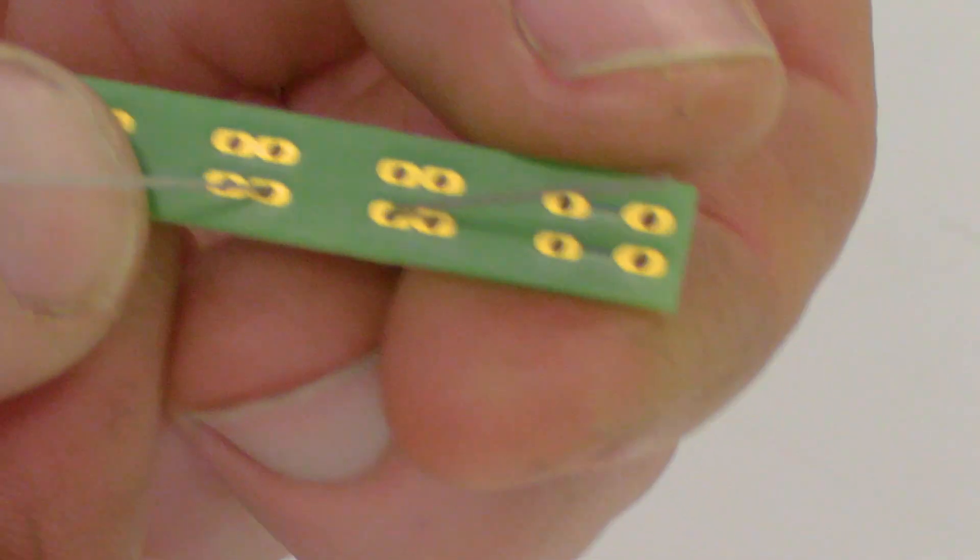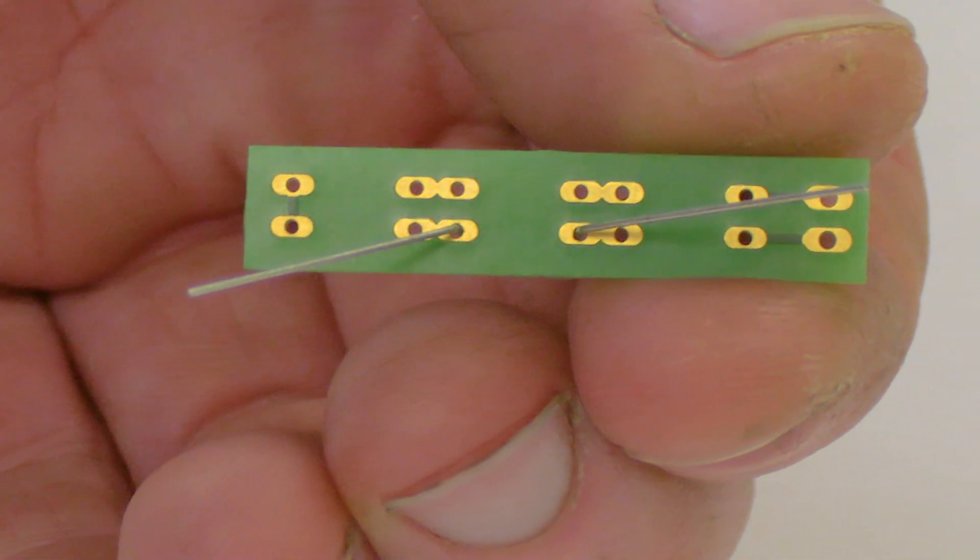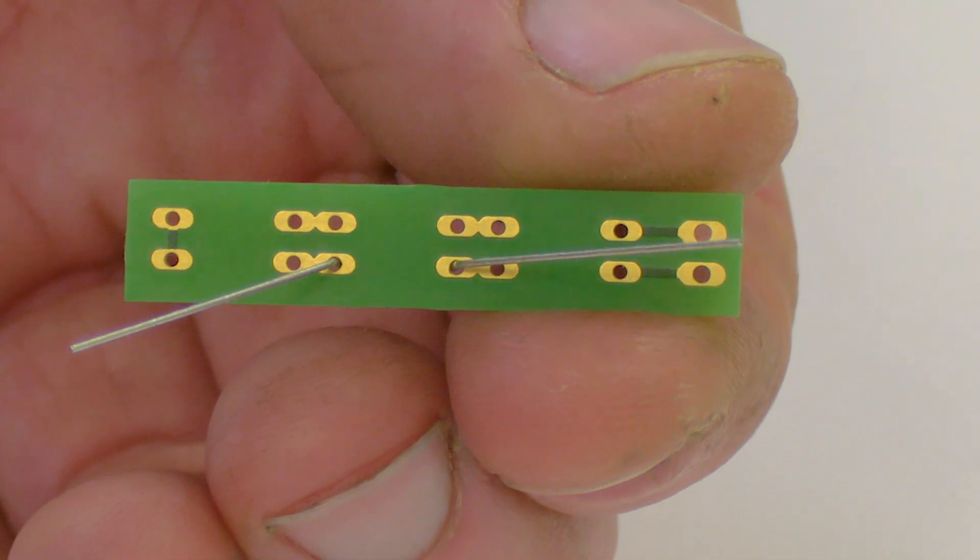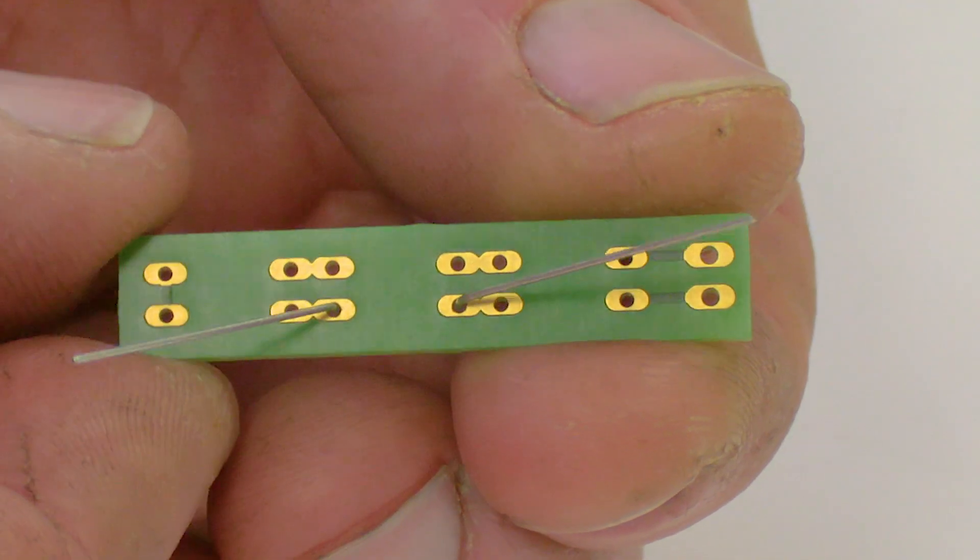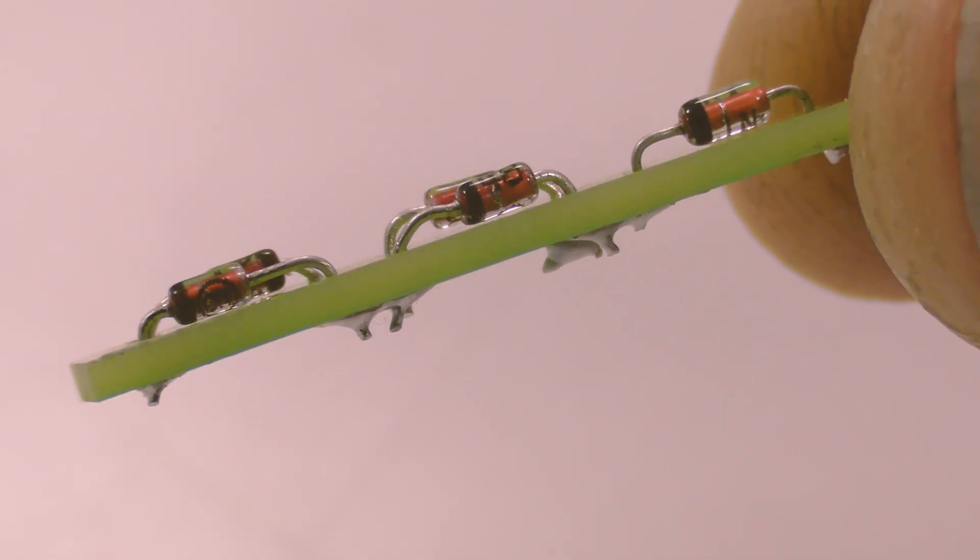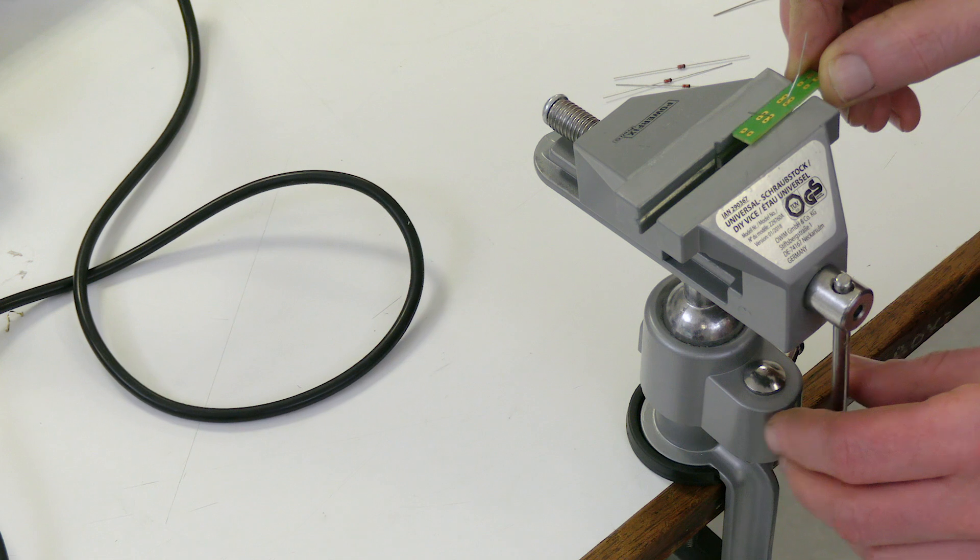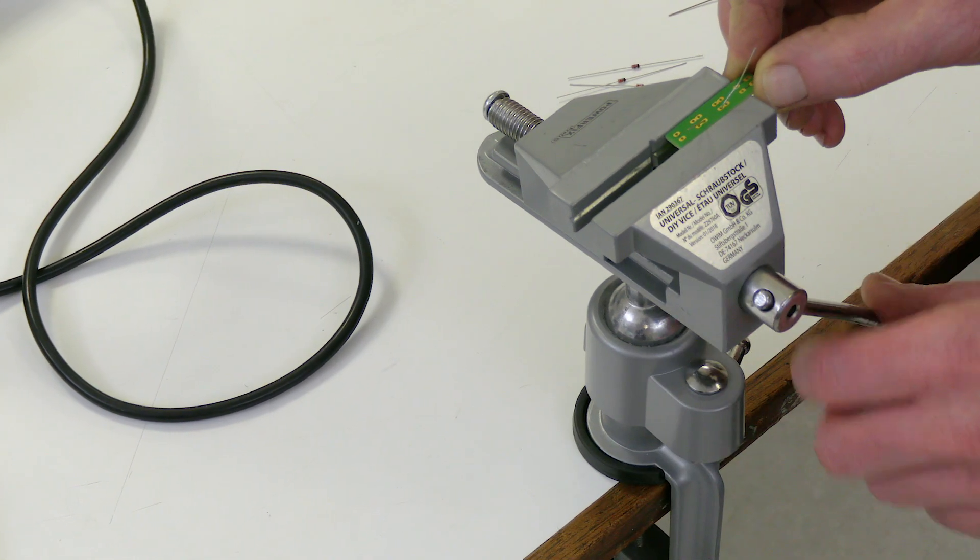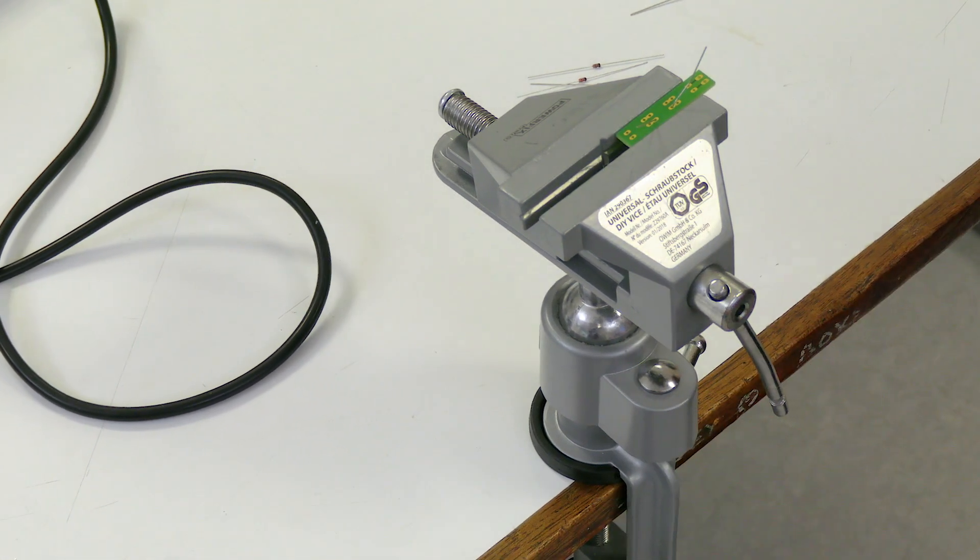Push the legs of the diode through the appropriate holes in the circuit board. Make sure that the legs stick out on the same side as the little metal pads that surround the holes and bend the legs slightly so that they hold the diode in place. Make sure that the diode is pushed down as far as it can go.